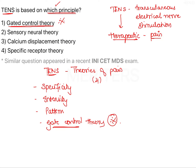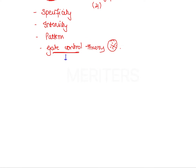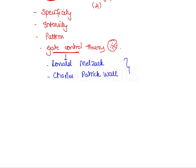It is very important to understand the Gate Control Theory. This Gate Control Theory is proposed by Ronald Melzack and Charles Patrick Wall in the year 1965.